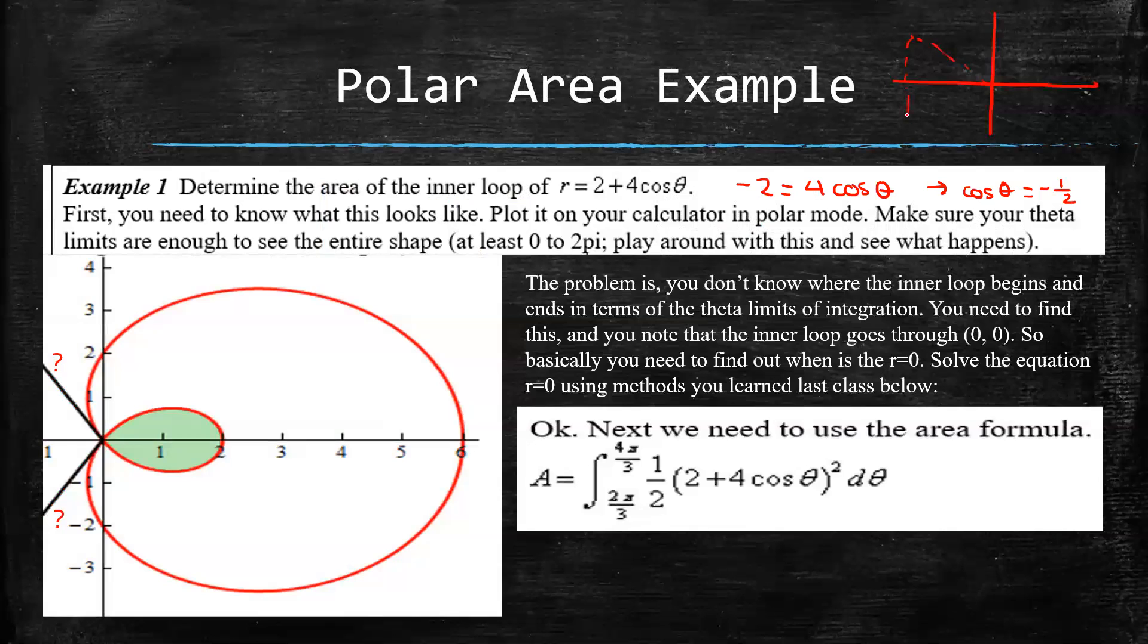And then if you think about when is cosine negative a half, it should be here and here. So cosine negative 1 over 2. That means this is negative root 3. This is root 3. So this is basically like your 60 degree reference angle. And if you think about what the angle is in terms of degrees, this is 180 minus 60. So that would be 120. This is 180 plus 60. So that would be 240.